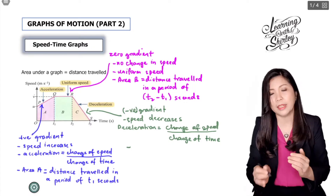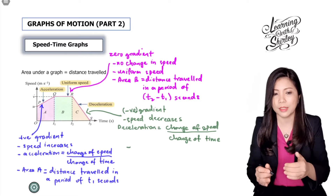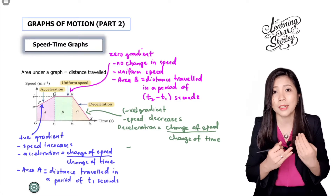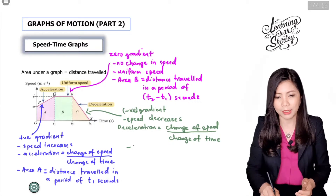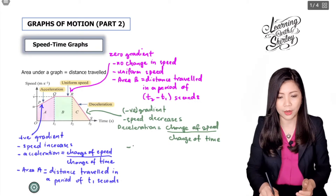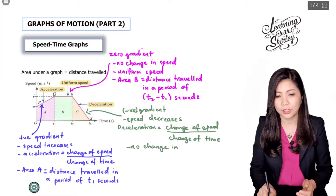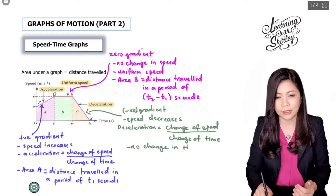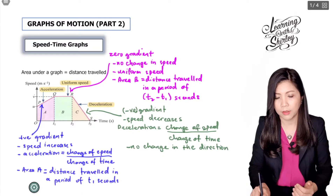This is different from the distance-time graph. For the distance-time graph, if the graph is going down, it means it's going back to the original position or in the opposite direction. But for the speed-time graph, it means no change in direction — it just means it's slowing down.